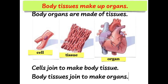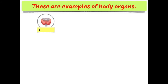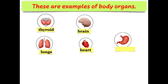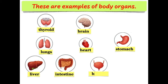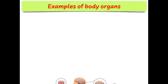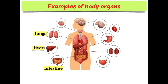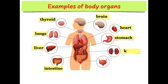Cells join to make body tissues, and body tissues join to make organs. Examples of body organs include the thyroid, brain, lungs, heart, stomach, liver, intestine, bladder, and kidneys. This picture shows where different organs are located in the body.